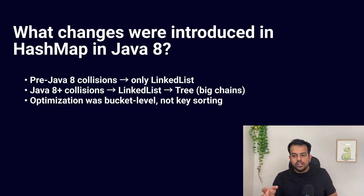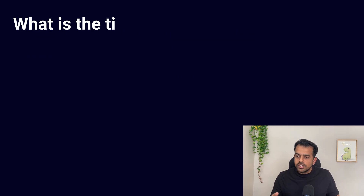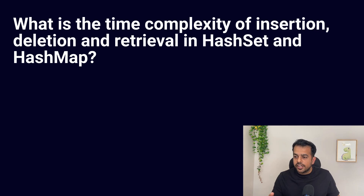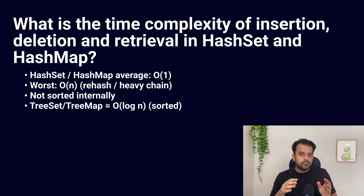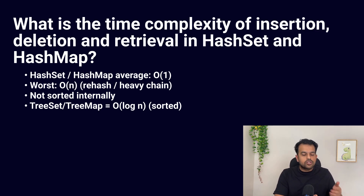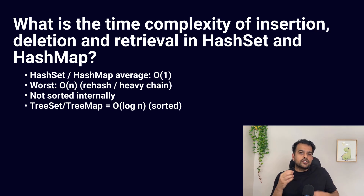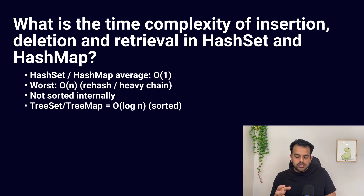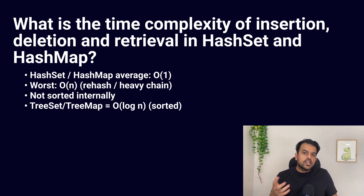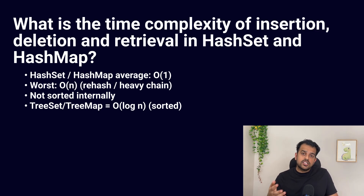The next question: what is the time complexity of insertion, deletion, and retrieval in HashSet and HashMap? For insertion, deletion, and retrieval, the average case is O(1) and the worst case is O(n). The worst case only happens when rehashing occurs or collision chains grow large. For TreeSet and TreeMap it is different — they use O(log n). Since HashSet and HashMap are hash-based, the average is fast but there is no sorting. In an interview: if it is hash-based, average time complexity is O(1) and worst case is O(n).